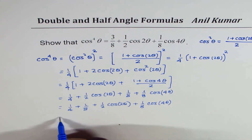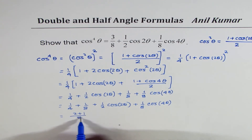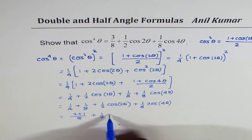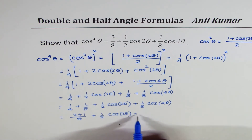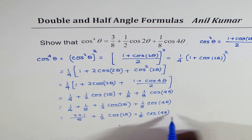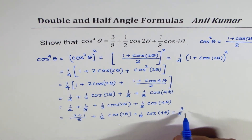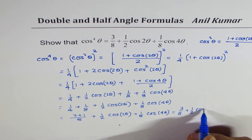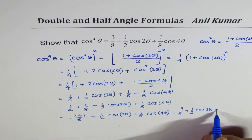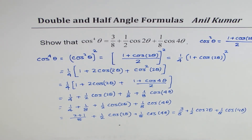Taking the common denominator as 8, we get 2 over 8 plus 1 over 8, which equals 3 over 8, plus half of cos 2 theta, plus 1 over 8 cos 4 theta. That is equal to the right-hand side. So that is how you prove this — a direct application of the double angle formula.